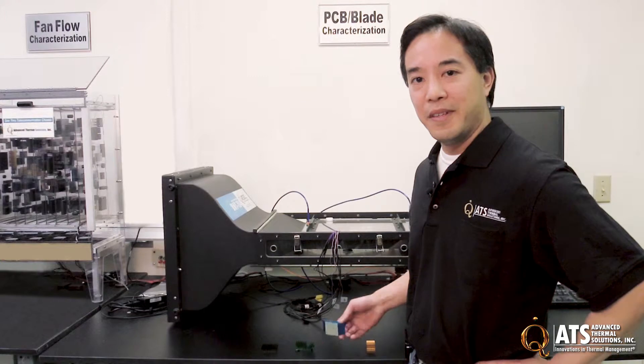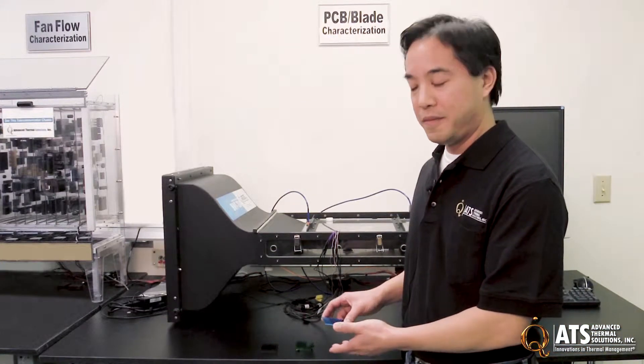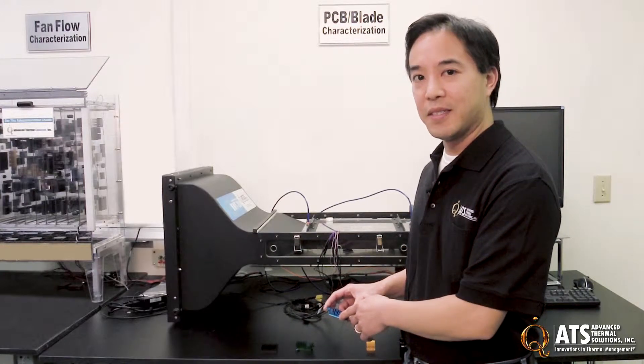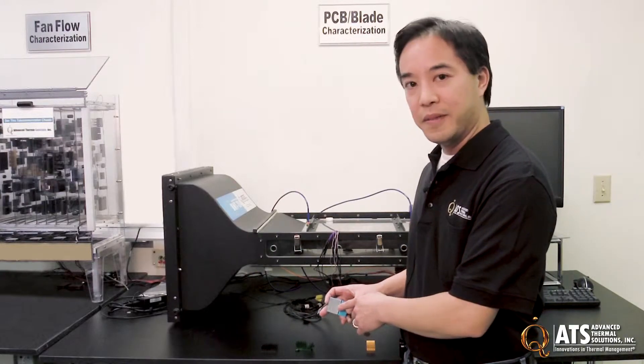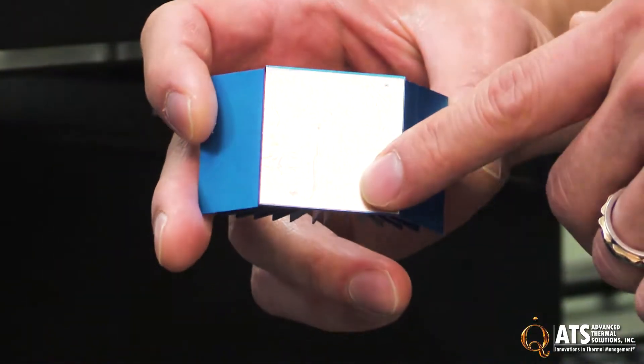Today we're going to be talking about the phase change materials. Most of our off-the-shelf heat sinks with the phase change material use Comeric's T766, which has a thin aluminum facing on the phase change material.